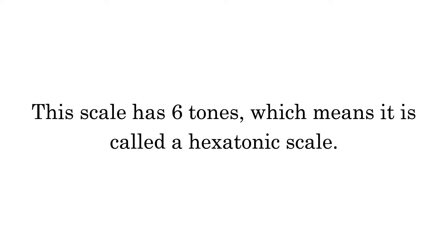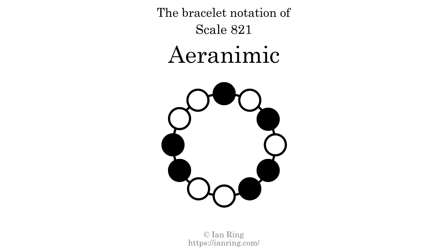This scale has six tones, which means it is called a hexatonic scale. This is a bracelet notation diagram of scale 821. The shaded circles represent tones that appear in the scale, and they are read clockwise, starting at the top.